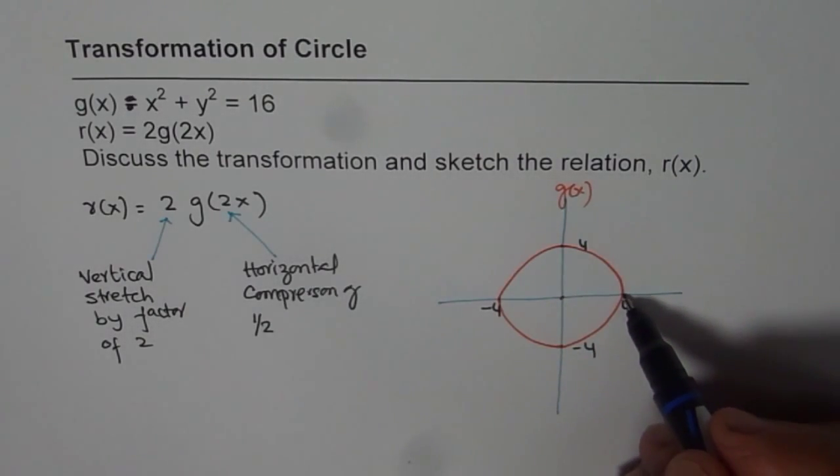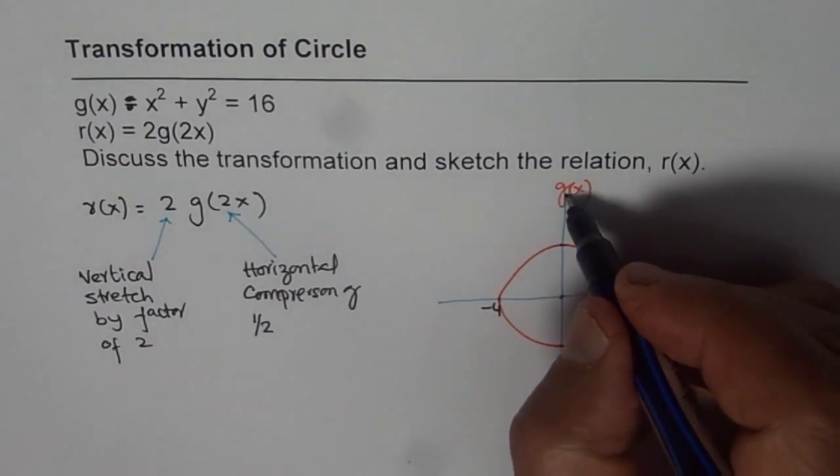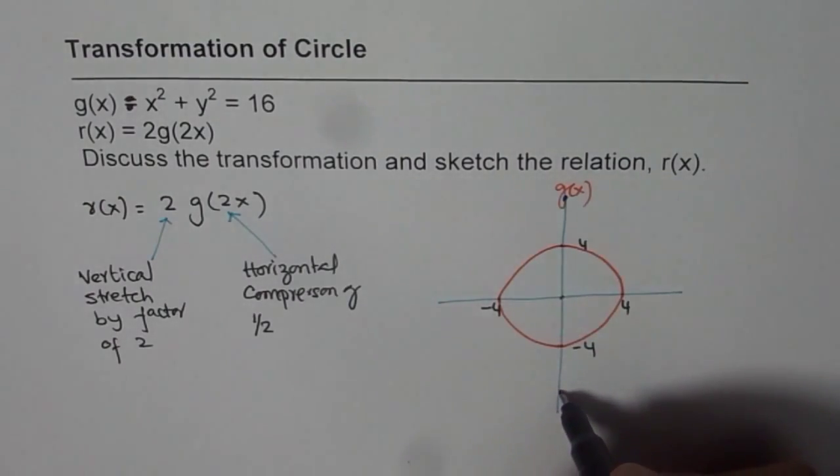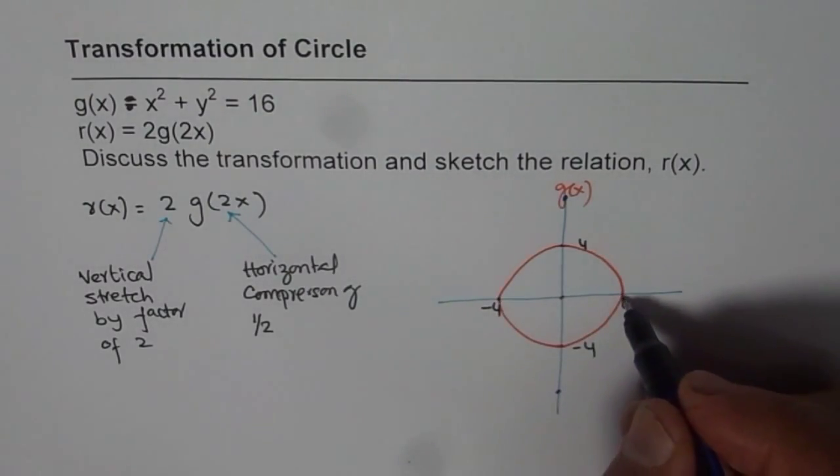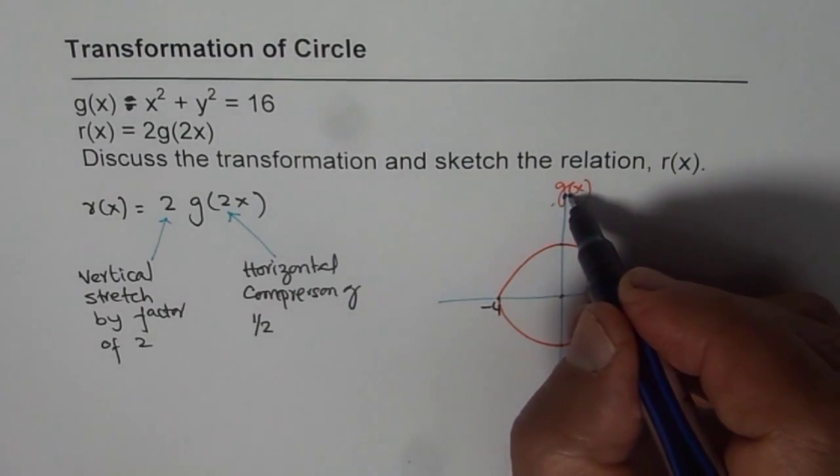Vertical stretch means every point is stretched vertically by a factor of 2. If I multiply 0 by 2, you get 0. But if I multiply 4 by 2, you get 8. Let us say this is 8. Minus 4 by 2 is minus 8 and these points remain, they are invariant.